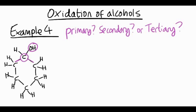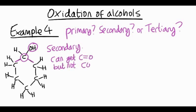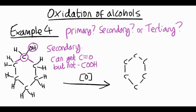But notice on the carbon with the OH group, we have got two carbon atoms. And we can treat this as a secondary alcohol. If you think about it, we can get a C double bond O here, but we can't get a COOH. So we can go as far as having a ketone, but we can't turn this into an acid without breaking carbon-carbon bonds.